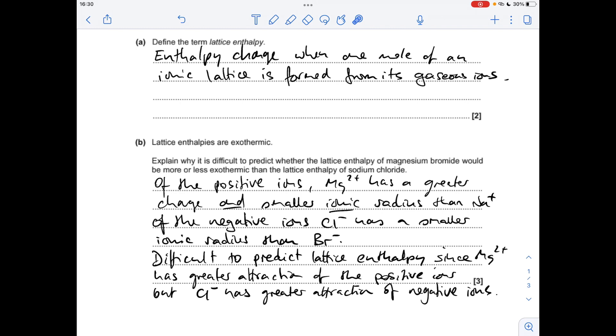So it's difficult to predict the lattice enthalpy because magnesium 2+ has the greater attraction of the positive ions, but Cl- has the greater attraction of the negative ions.